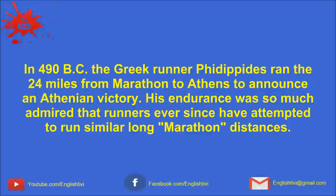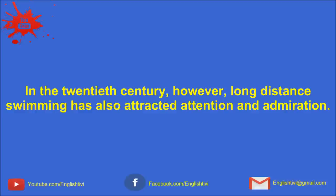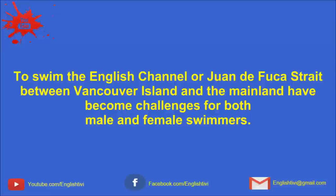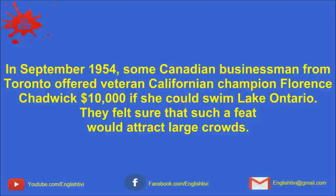In 490 BC, the Greek runner Philippides ran the 24 miles from Marathon to Athens to announce the Athenian victory. His endurance was so much admired that runners ever since have attempted to run similar long marathon distances. In the 20th century, however, long-distance swimming has also attracted attention and admiration. To swim the English Channel, or Juan de Fuca Strait between Vancouver Island and the mainland, have become challenges for both male and female swimmers.